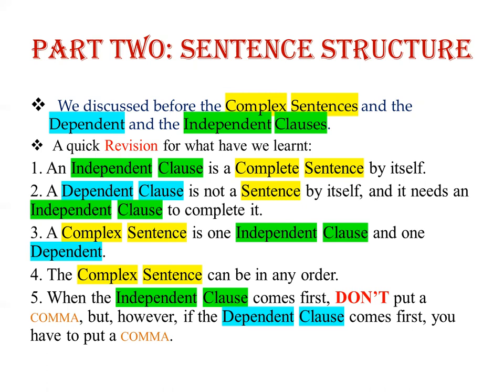The complex sentence can be in any order. When the independent clause comes first, do not put a comma. However, if the dependent clause comes first, you must put a comma. The dependent clause is the same as an independent clause, but what differs is the subordinating conjunction.